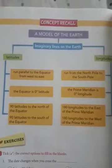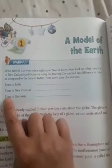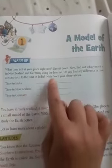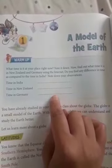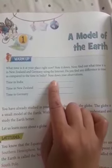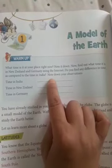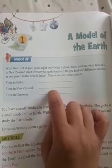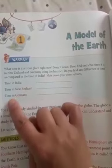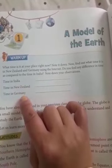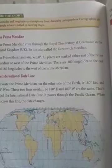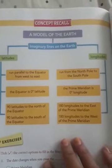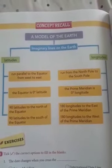Your homework today is to find out the time — as we started at the beginning of the lesson — the time in India, time in New Zealand, and time in Germany. If it is 11 a.m. in India, find what the time is in New Zealand and Germany at that same time. It is very simple. Till then, take care, have a good time, read it properly, and we will go through the exercise in the next video. See you.